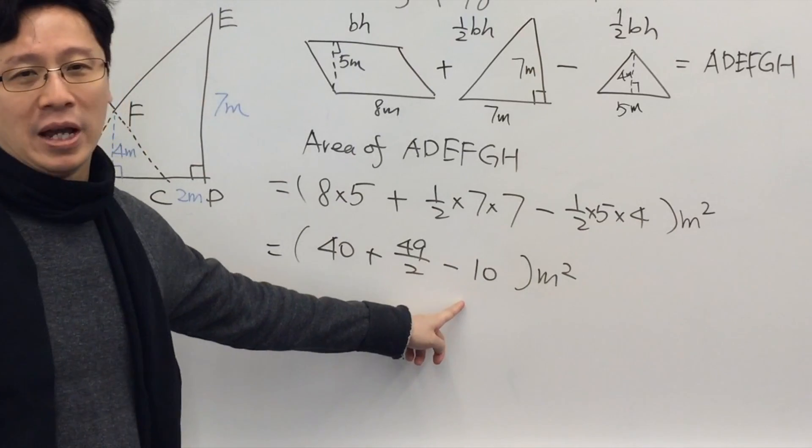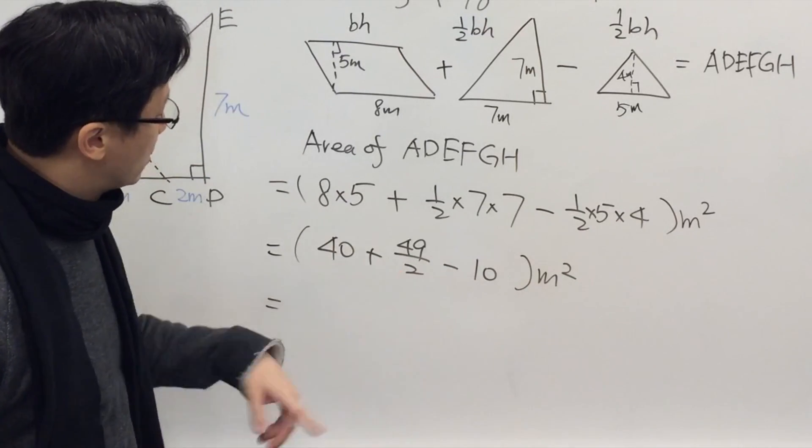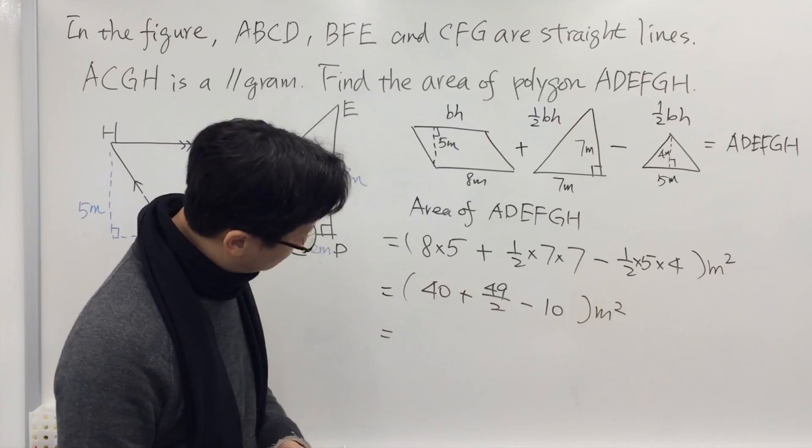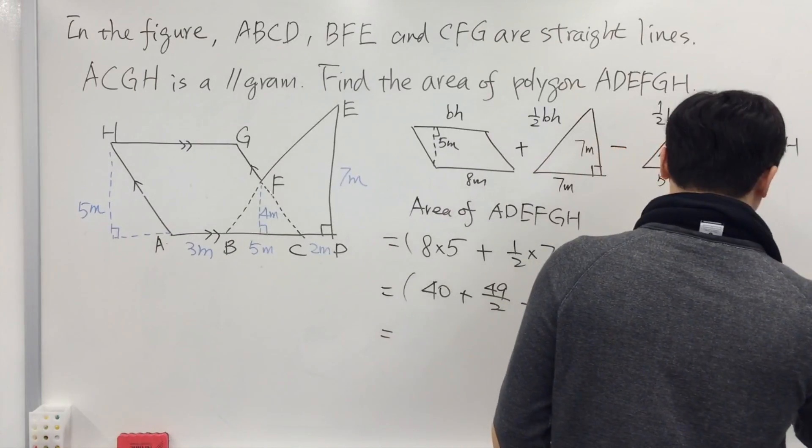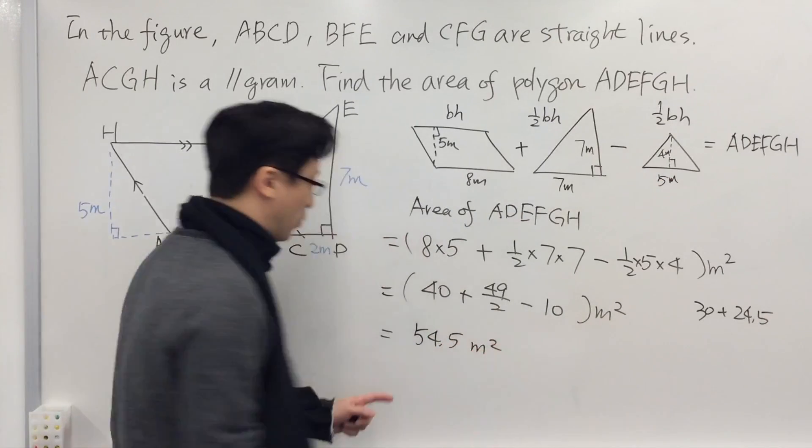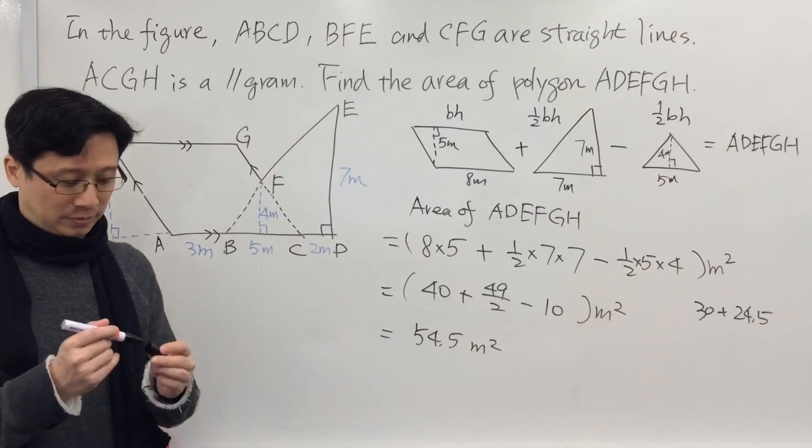This is 40 minus 10, we get 30. 30 plus 24.5, so we have 54.5 square meters. Thank you.